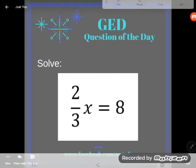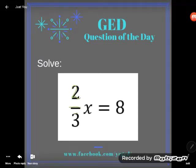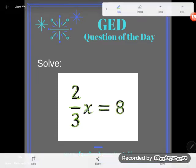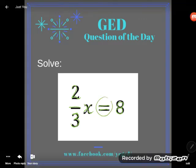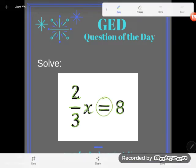Notice what I have here. This says 2/3x equals 8. Directions say solve, and I say duh, of course I'm solving, because look at this, I have an equation with that equal sign there.